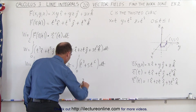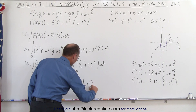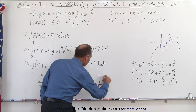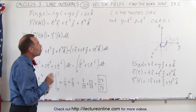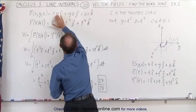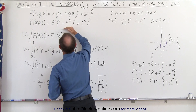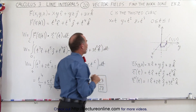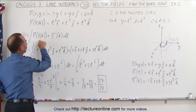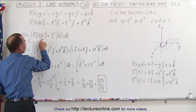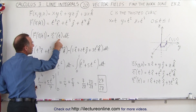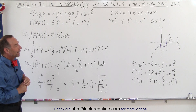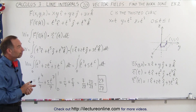This equals 27 over 28, which is the work done when moving through the vector field defined by that equation. When we convert to the parameterized variable t and move through the twisted cubic defined by those variables, we multiply the vector field in terms of t with the derivative of the position vector in terms of t, integrate, and get the work done moving through the vector field along that path. And that's how we do line integrals through vector fields.